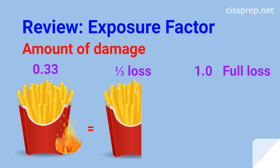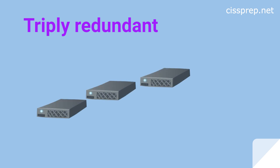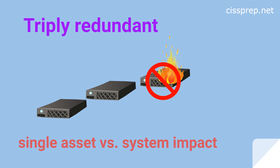Here's where the term triply redundant comes in. If a system is triply redundant, that means that when a single node gets destroyed, only one-third of the system will be impacted — not one-third of the asset value. This could be important for an exam question, so be sure to pay attention to wording and make sure you understand exactly what's being destroyed when it comes to exposure factor.